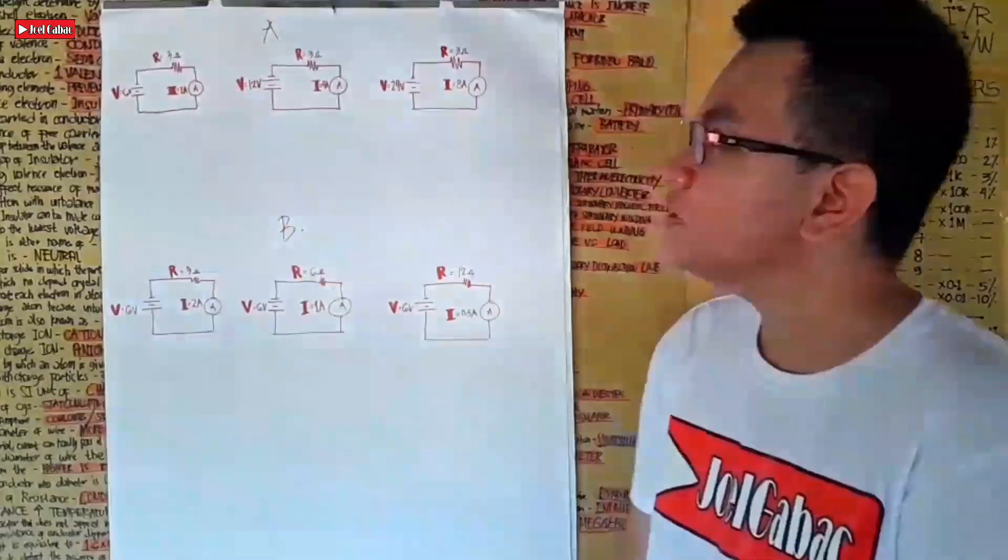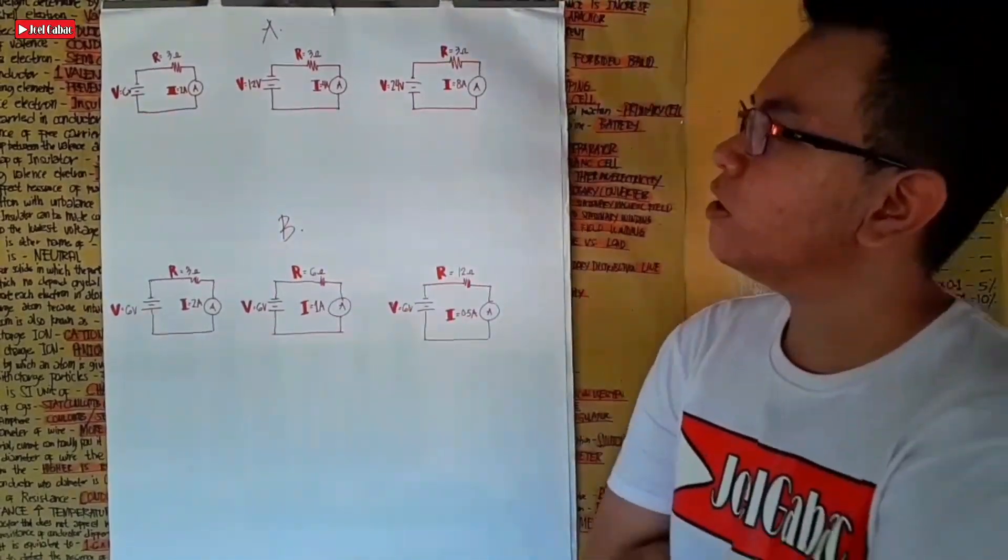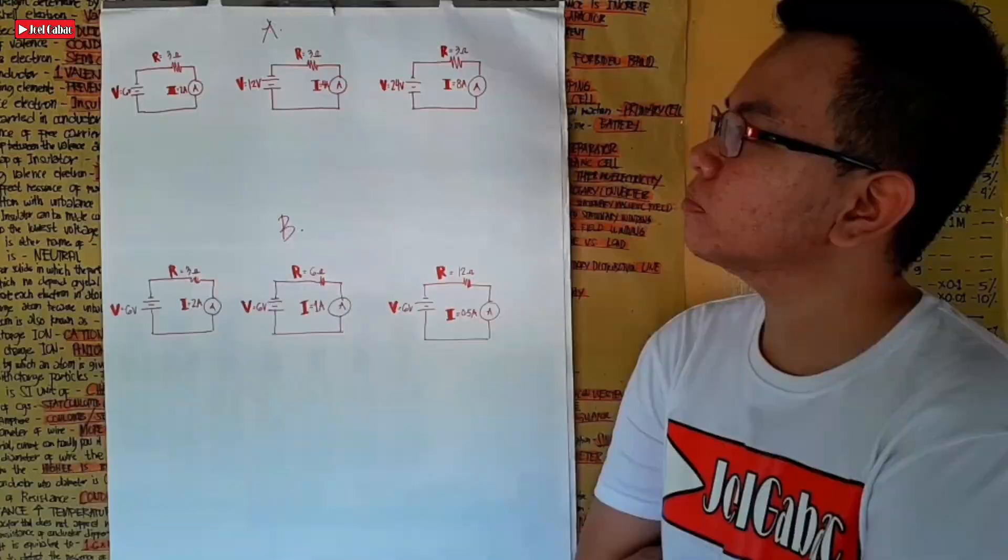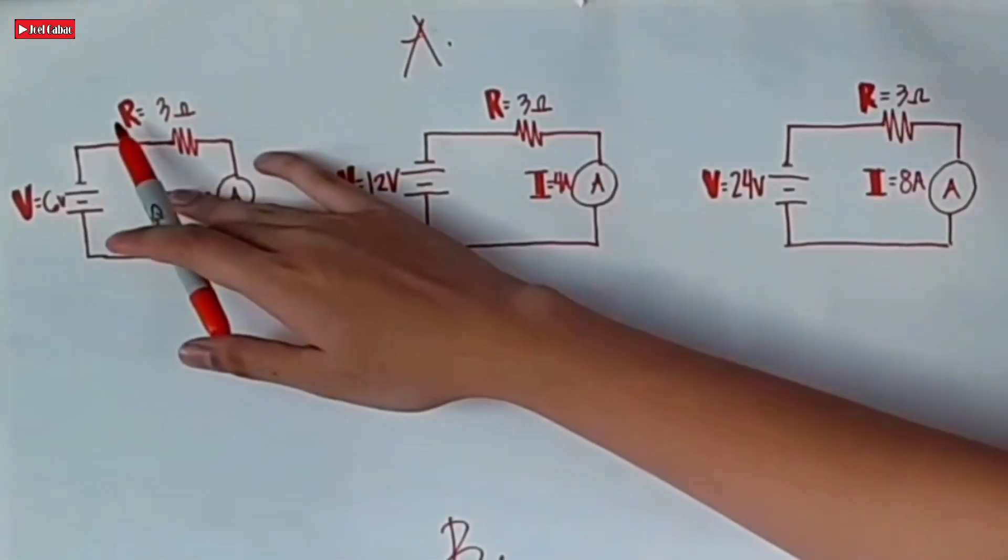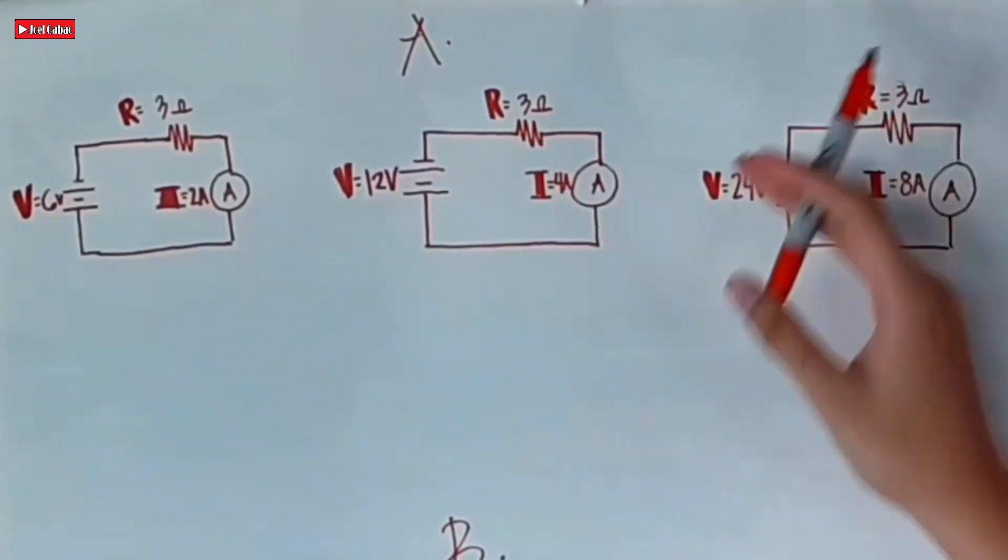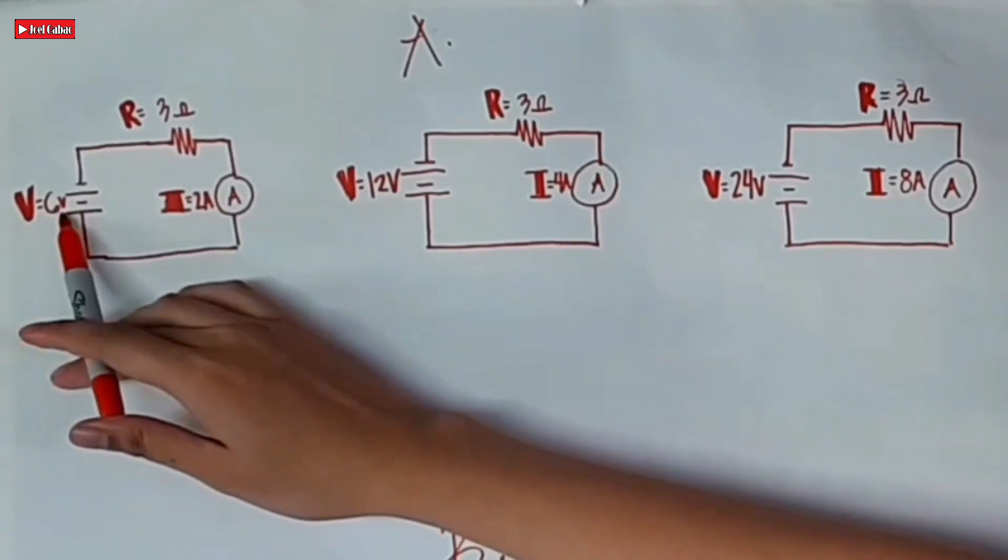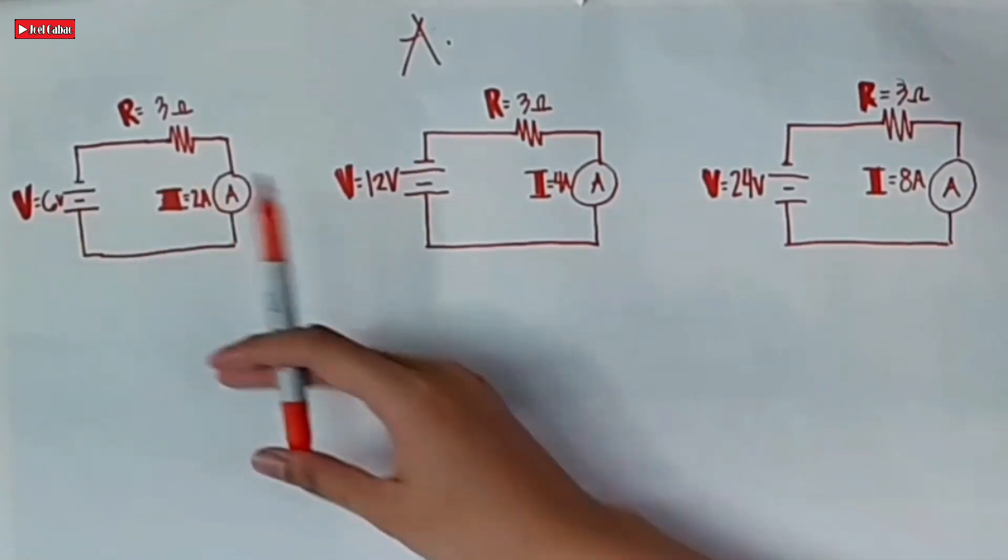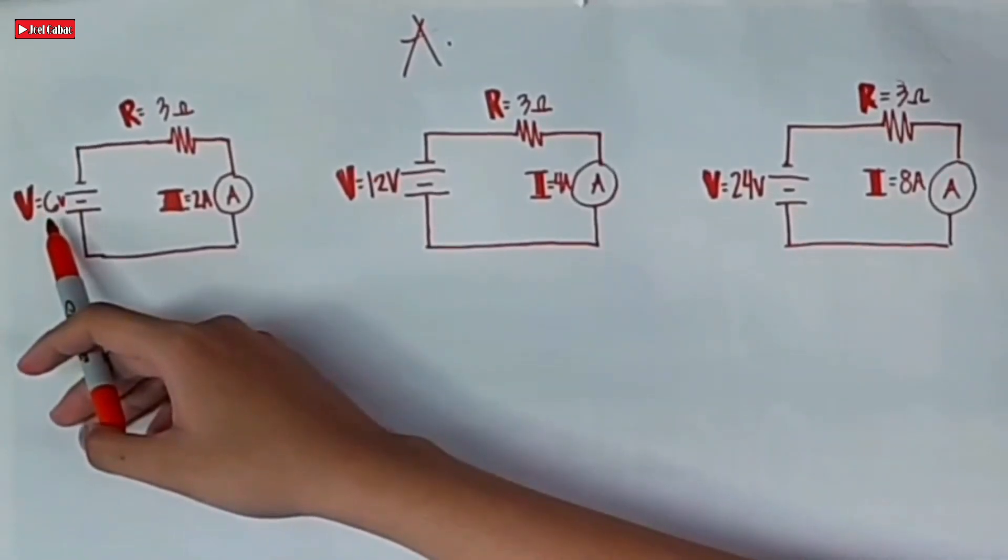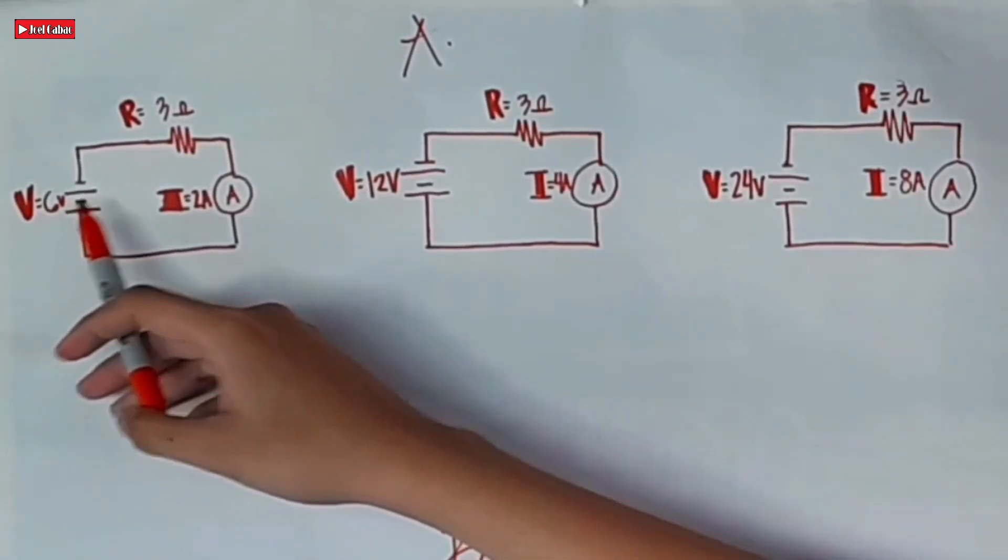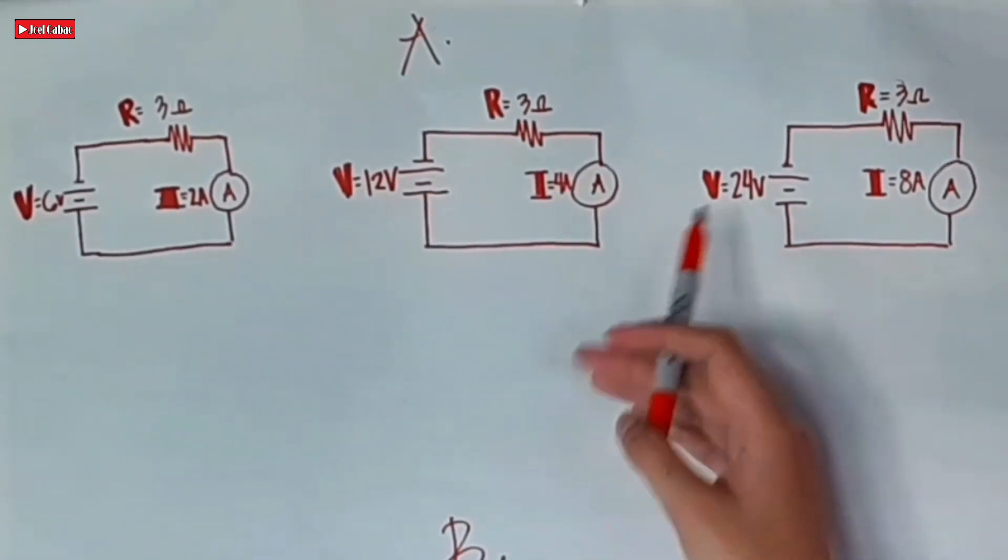Here in Figure A, what do you observe? As we can see, the resistance is the same at 3 ohms. We see the voltage as 6 volts, 12 volts, and 24 volts, appearing to multiply by 2. 6 times 2 equals 12, 12 times 2 equals 24.